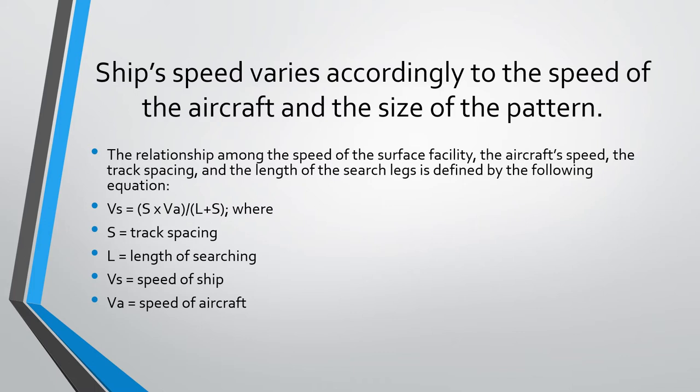The relationship among the speed of the surface facility, the aircraft speed, the track spacing, and the length of the search leg is defined by the following equation: Vs (speed of the ship) = track spacing multiplied by the speed of the aircraft, divided by the sum of the length of the search leg and the track spacing.